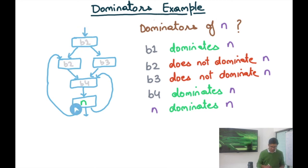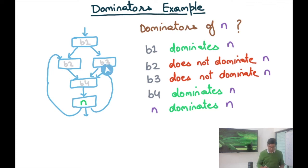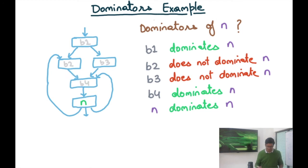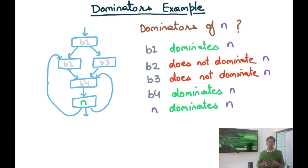There are potentially infinitely many paths because of the cycle, but even one path that avoids B3 is enough to say B3 does not dominate N. Does B4 dominate N? Yes — every path from the start node to N must go through B4. Finally, N dominates N by the reflexivity of domination: intuitively, you cannot reach a node without visiting it. This reflexivity property also makes algorithms easier to reason about.